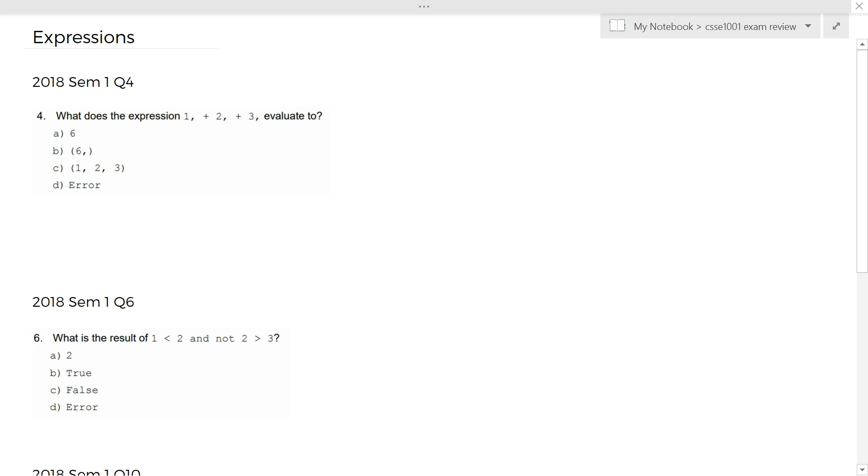So let's do 2018 semester 1 question 4. First question we'll be covering is what does this expression 1 comma 2 comma 3 evaluate, 1 plus 2 plus 3 evaluates to? So immediately you might be going 1 plus 2 plus 3 equals 6, right? However, notice here I have just the integer 1, but in the question I have a comma here. It's very different.